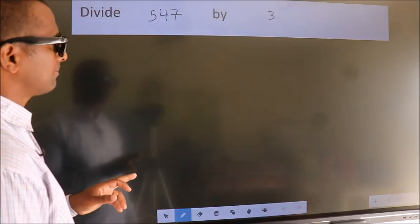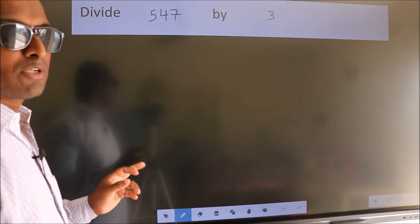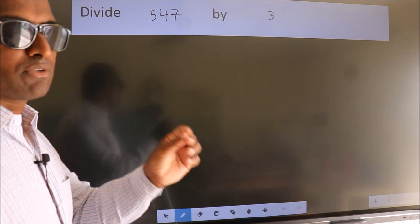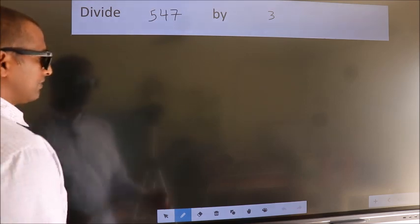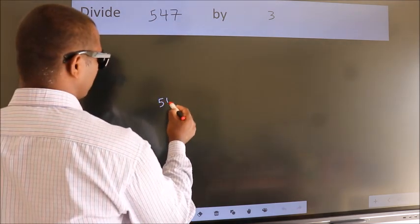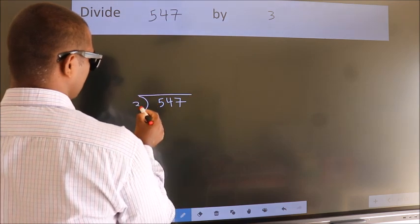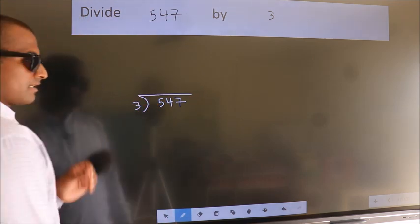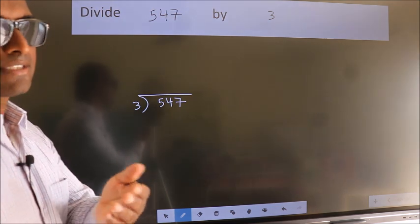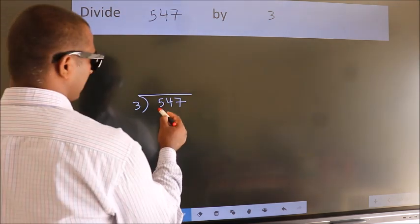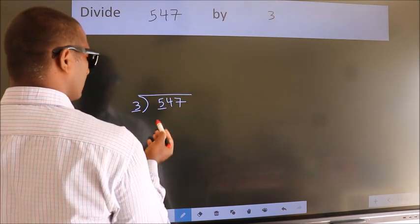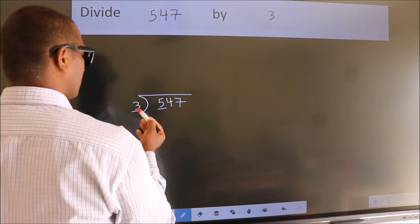Divide 547 by 3. To do this division, we should frame it in this way: 547 here, 3 here. This is your step one. Next, here we have 5. Here, 3. A number close to 5 in three table is 3 ones 3.